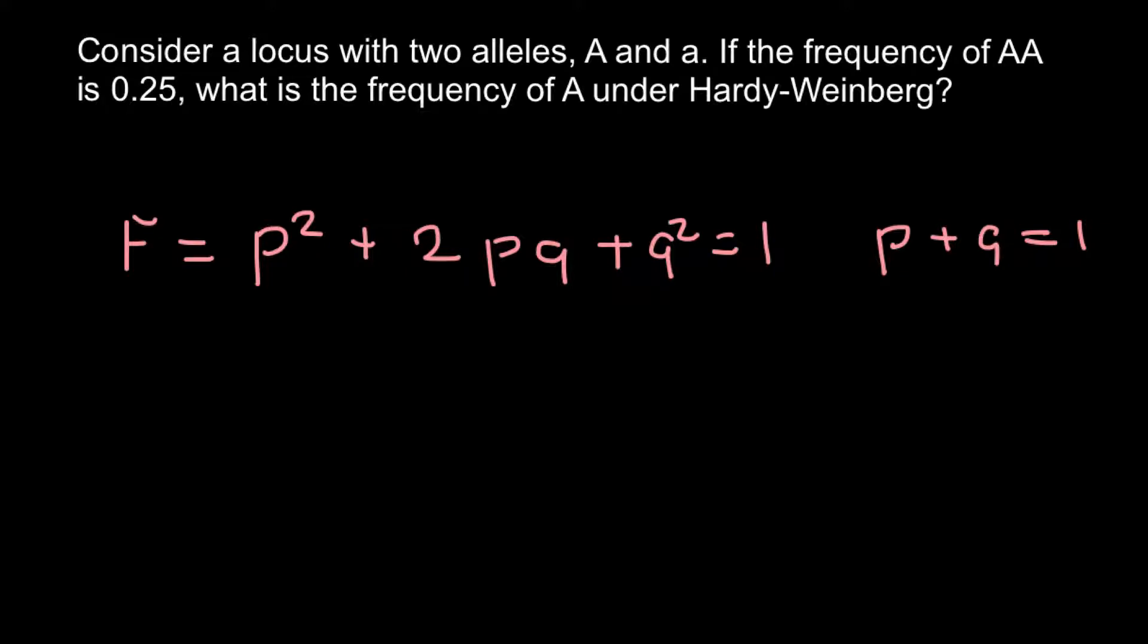In this formula, p² stands for the homozygous dominant genotype, 2pq stands for the heterozygous genotype, and q² stands for the frequency of the homozygous recessive genotype. If we are given that frequency of the homozygous dominant genotype is 0.25, we can easily find the frequency of the p allele in this population.